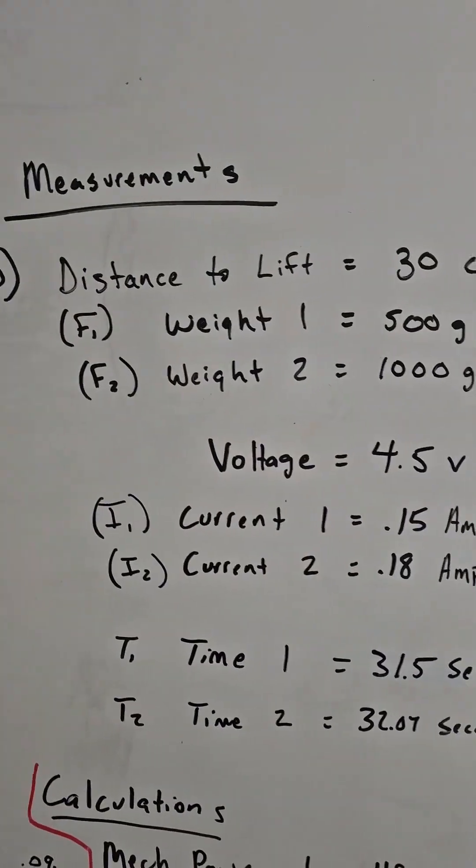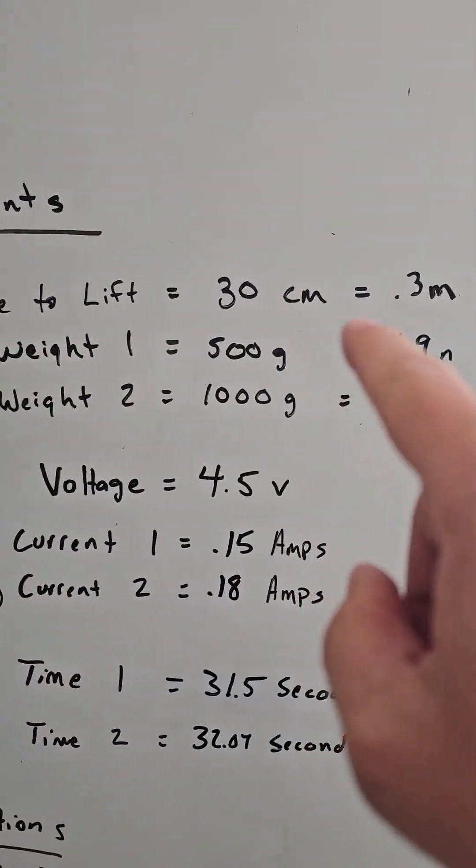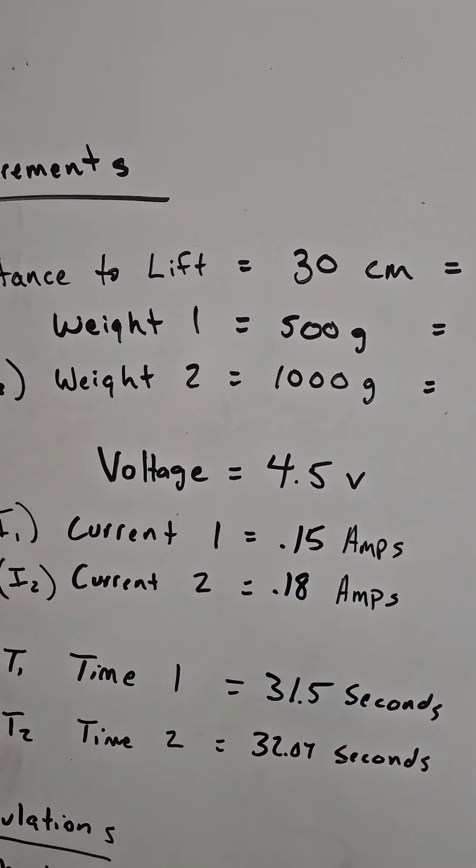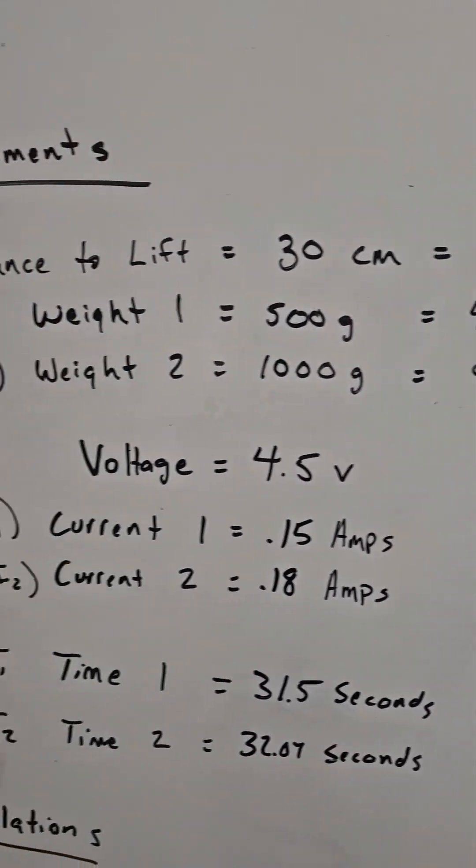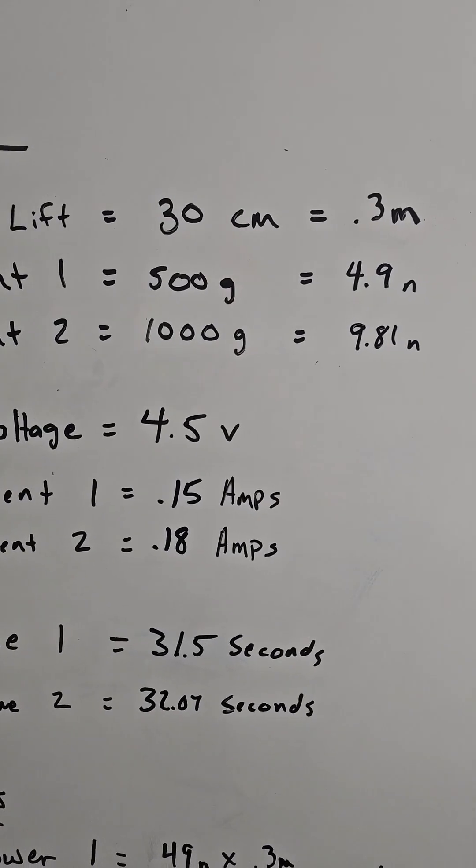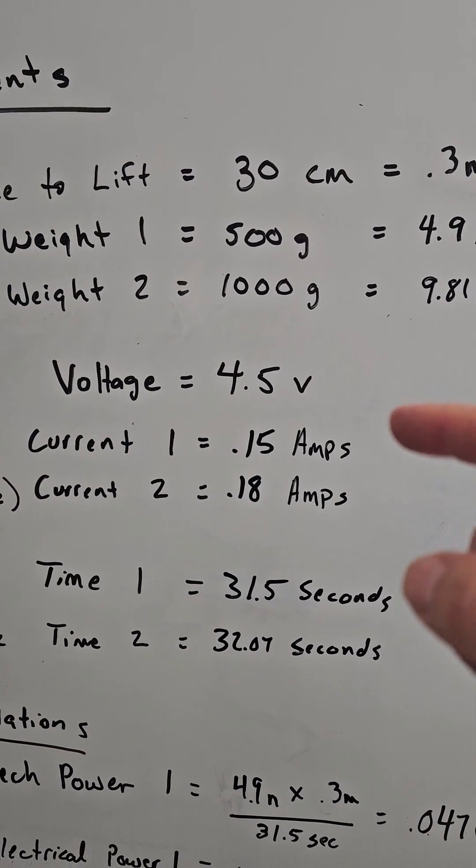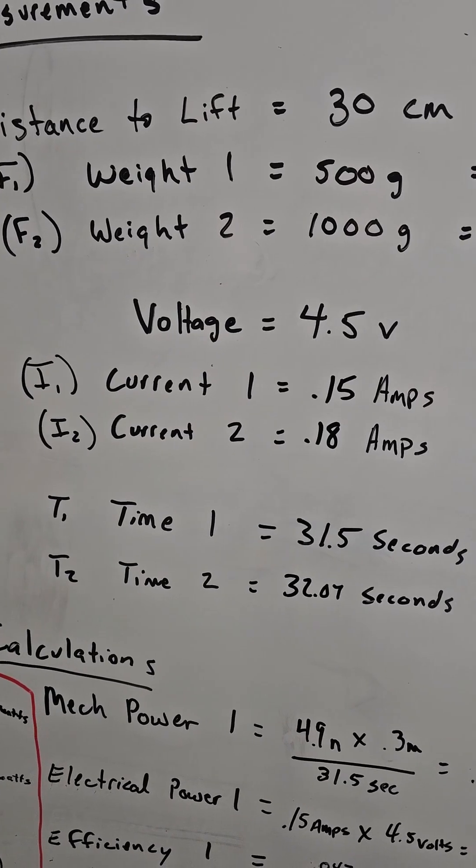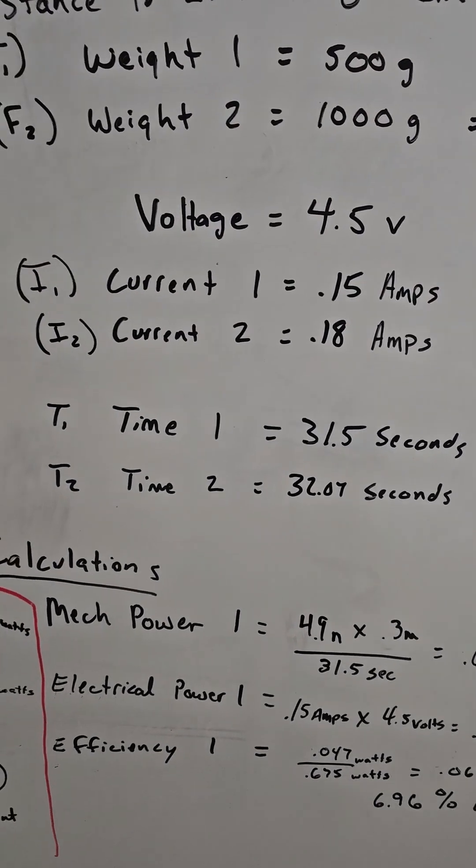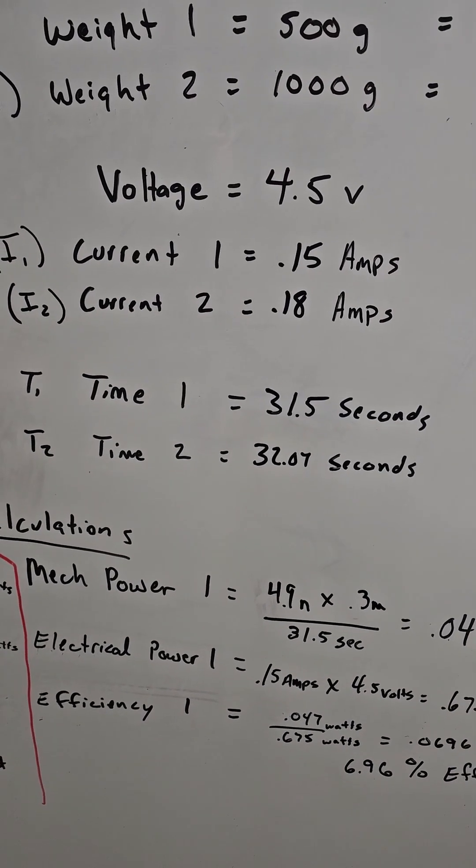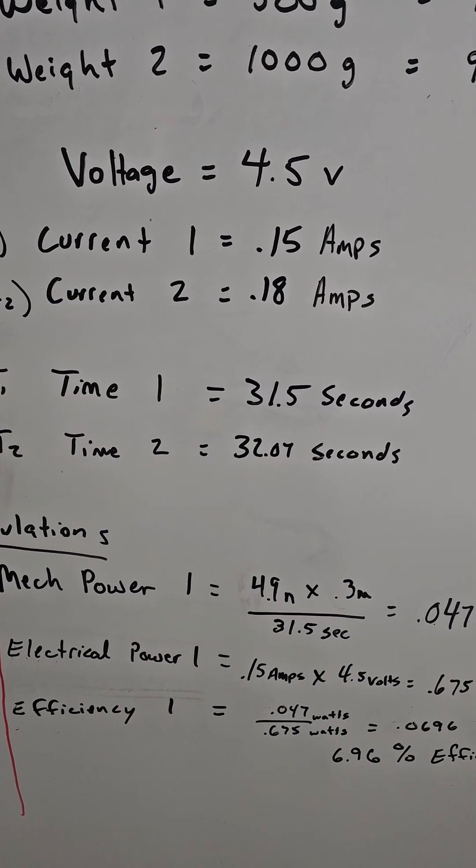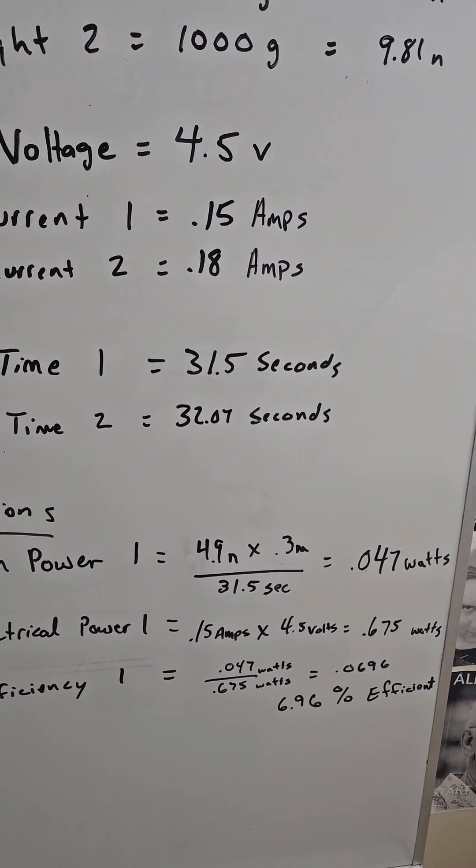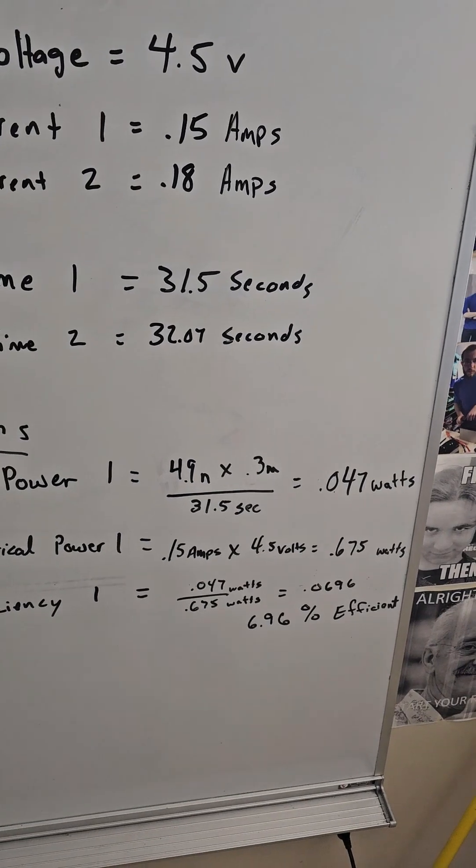Okay, so let's take a look at what we got as far as the measurements. The distance that we're going to lift is 30 centimeters, which we need to convert to meters, so 0.3 meters. We've got weight one at 500 grams, which converts to 4.9 newtons; weight two at 1000 grams is 9.81 newtons. Voltage stayed the same. Current was 0.15 amps for the first weight and 0.18 amps for the second weight. The time it took to lift 30 centimeters for the 500 gram weight was 31.5 seconds; time for the thousand gram was 32.02 seconds.